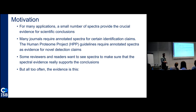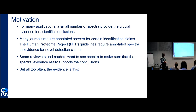If you are trying to detect novel things — novel translations, novel proteins — you want to make sure that the evidence you have is not a false positive. The Human Proteome Project guidelines right now require that you provide the spectra you are using as a claim for novel detections. Some reviewers and some readers of papers want to see these spectra to really make sure that the conclusions being claimed are really supported by the spectral evidence.